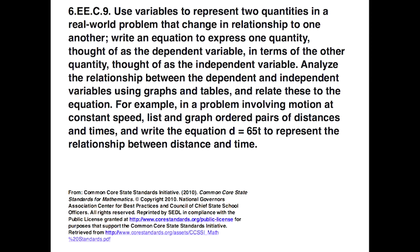Use variables to represent two quantities in a real-world problem that change in relationship to one another. Write an equation to express one quantity, thought of as the dependent variable, in terms of the other quantity, thought of as the independent variable. Analyze the relationship between the dependent and independent variables using graphs and tables and relate these to the equation. For example, in a problem involving motion at constant speed, list and graph ordered pairs of distances and times, and write the equation d = 65t to represent the relationship between distance and time.